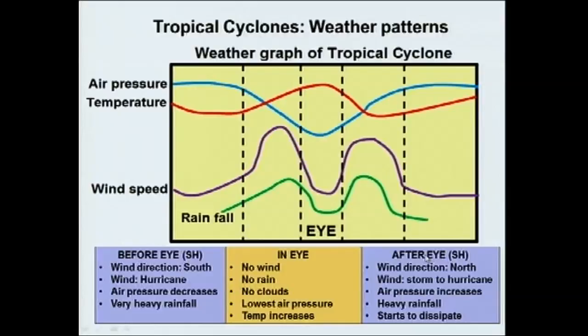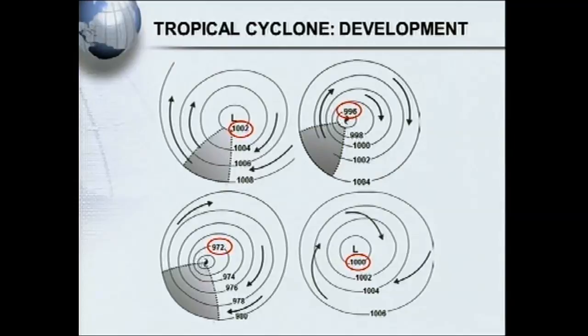After the eye, when the back part of the tropical cyclone moves over, the wind direction will be north. Again, you're going to get very strong storm to hurricane winds. Air pressure increases, heavy rainfall, and after that it starts to dissipate. When you've got the calmness of the eye, you must still remain inside, because when the back part of the storm hits you, you're going to get the same severe weather as in the front section.